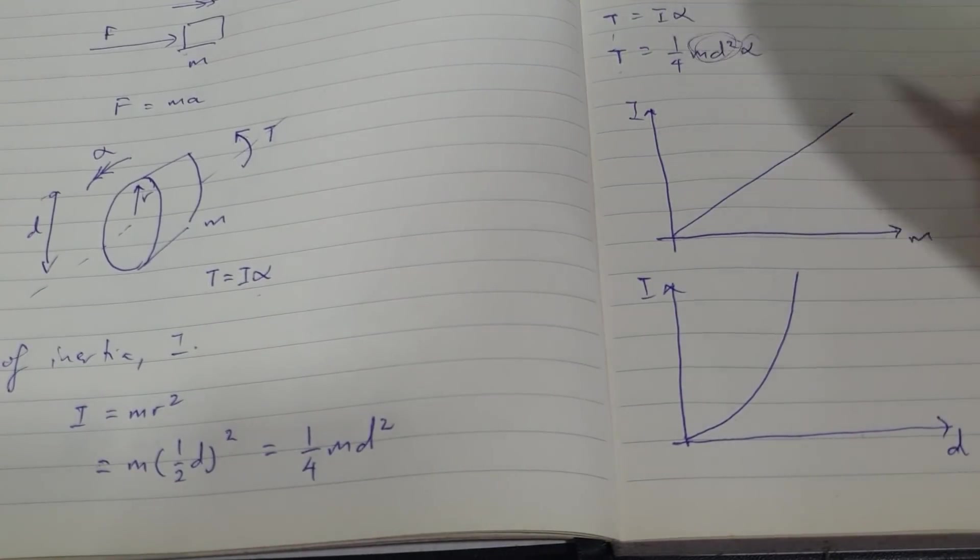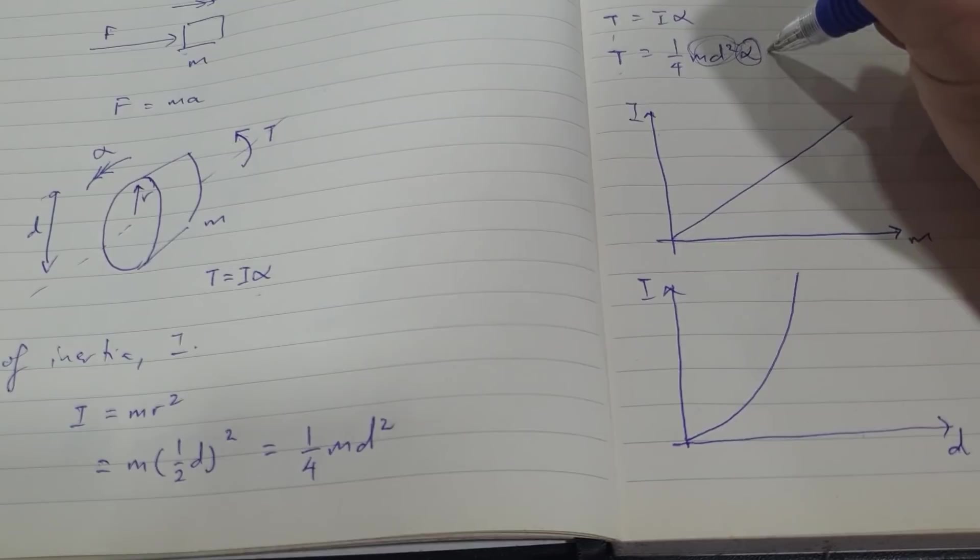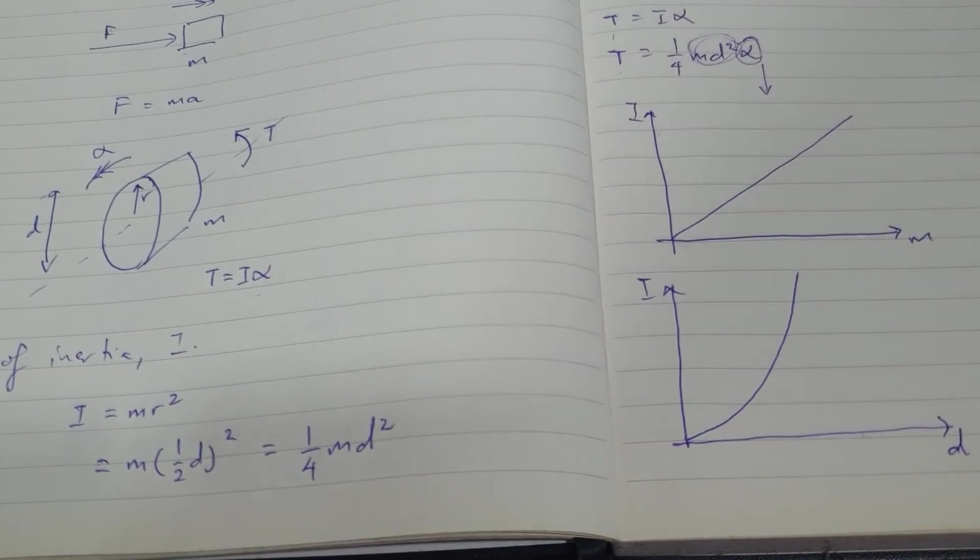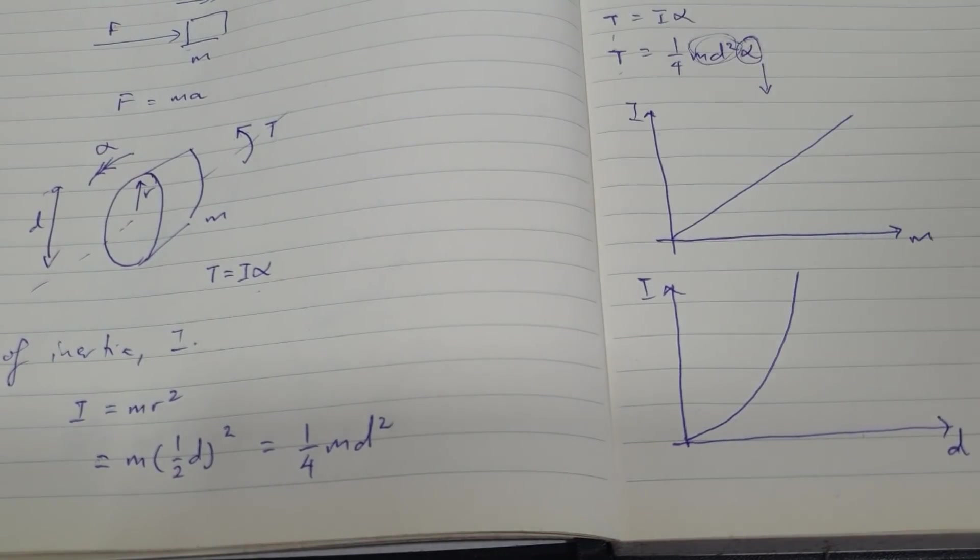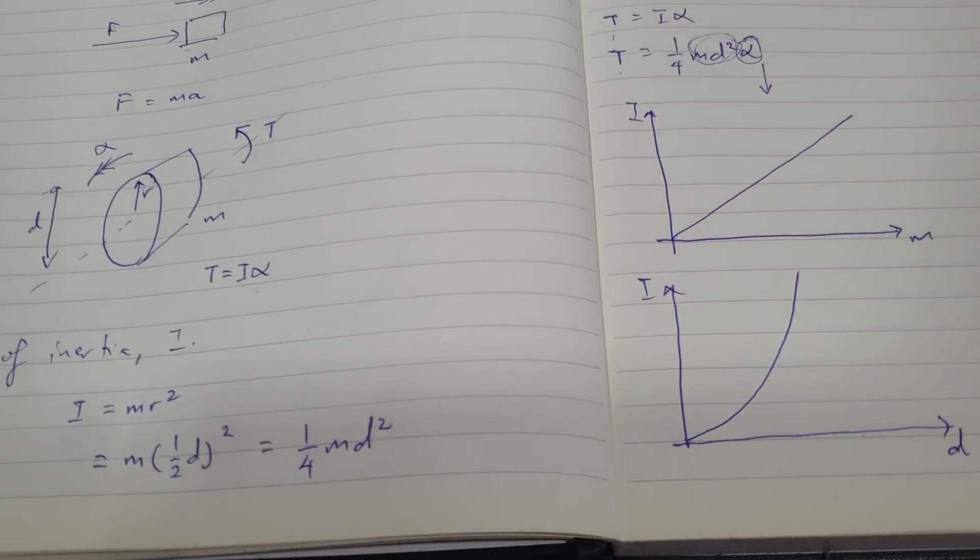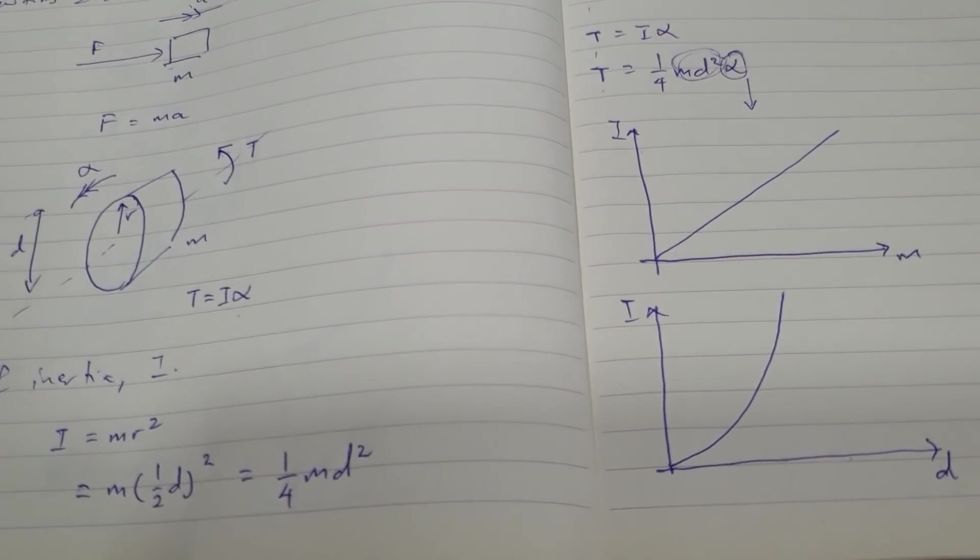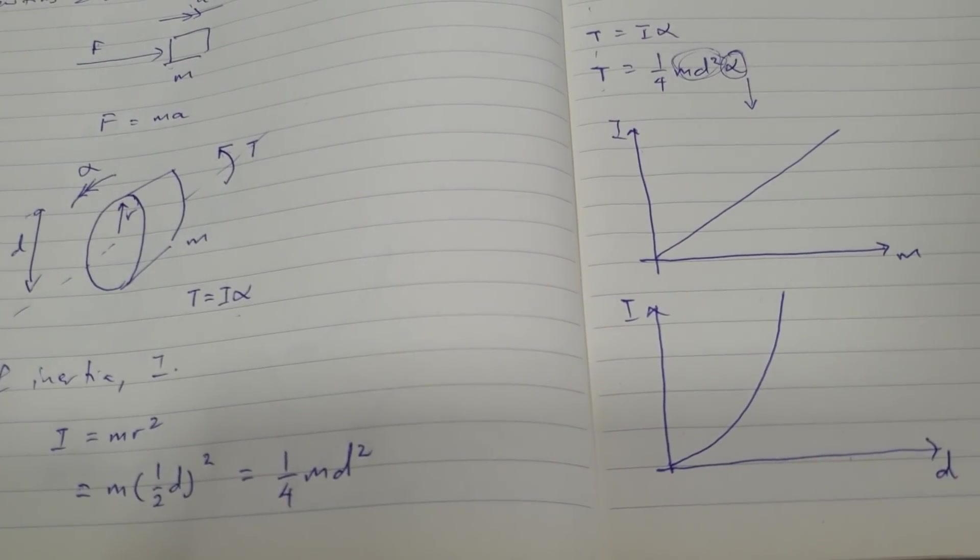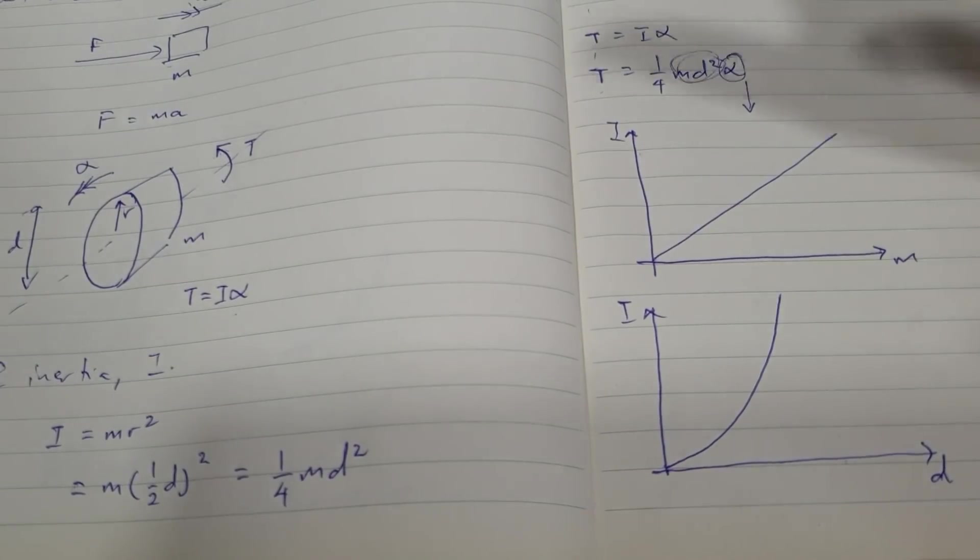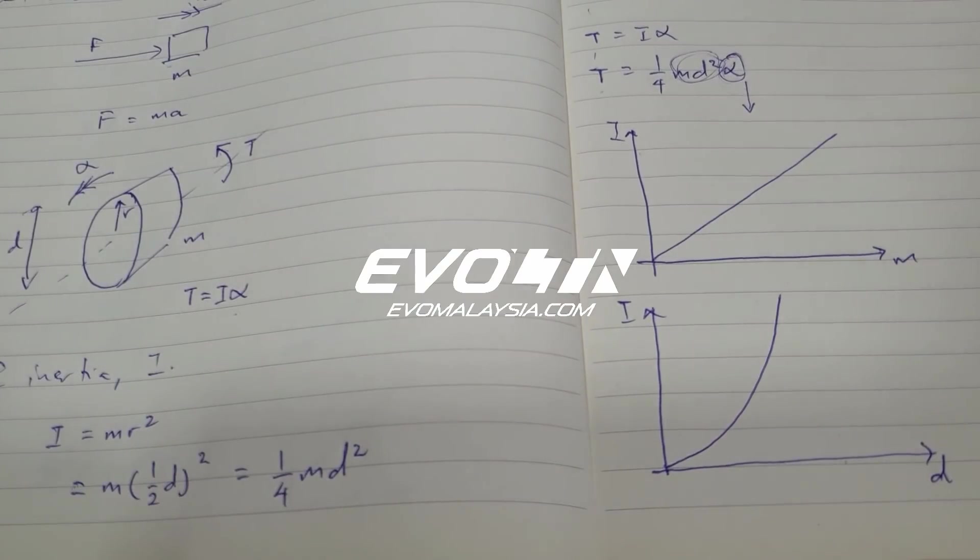So this is how, this explains why every time you upsize your rim, even if you were to go to a bigger size rim but of the same weight, you actually lose a bit of your straight line performance.